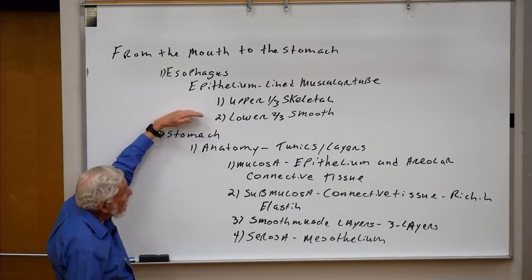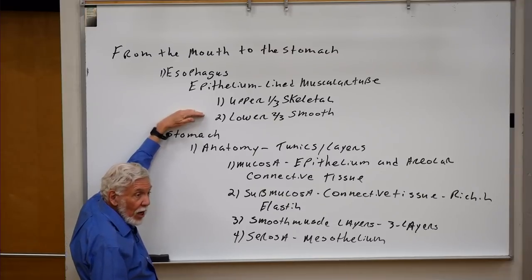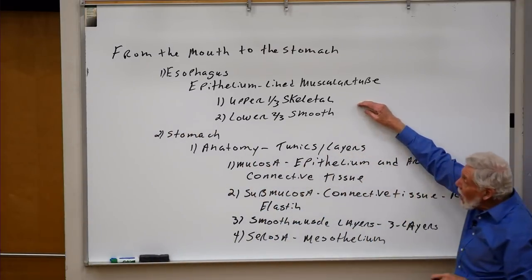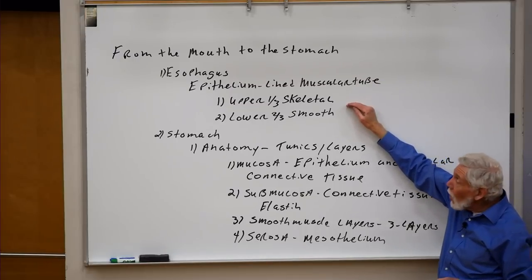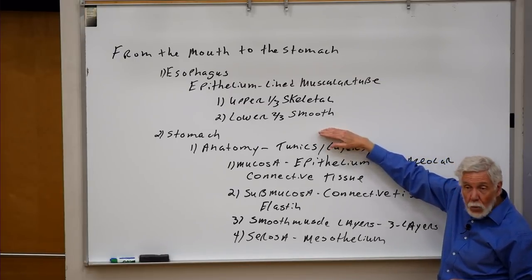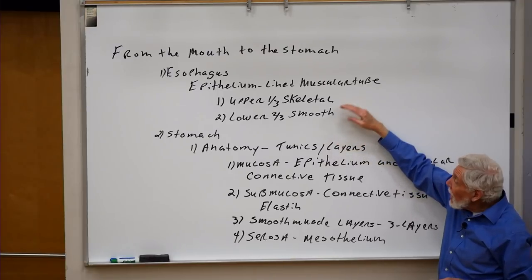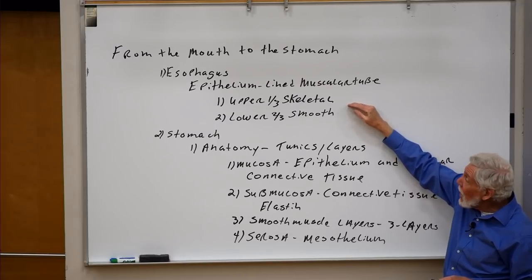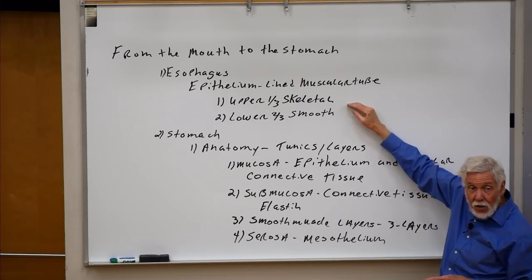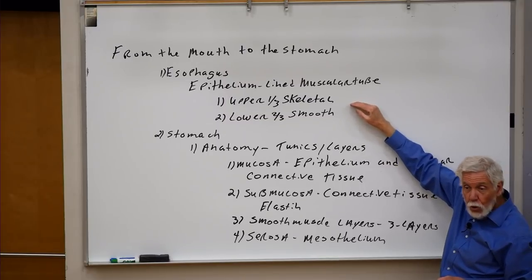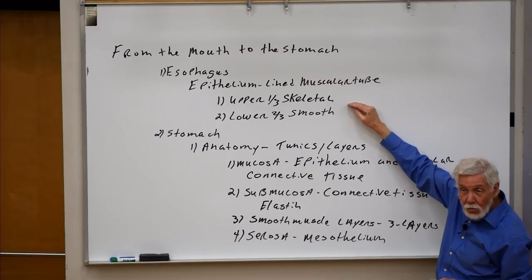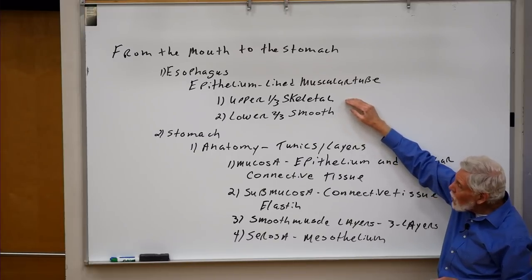We have epithelial cells attached to an underlying muscle layer. In the upper third of the esophagus we have skeletal muscle, and in the lower two-thirds there's smooth muscle. The skeletal muscle is activated by lower motor neurons found in the brainstem — the same neurons activated when you get a wad of chewing gum too far back and lose control of it, activating the swallowing reflex.